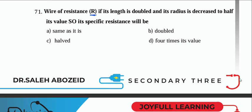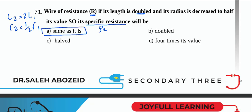A wire of resistance R has its length doubled (L2 = 2L1) and radius decreased to half (r2 = ½r1). The specific resistance (resistivity) is not affected by these changes at all — it only depends on material and temperature.